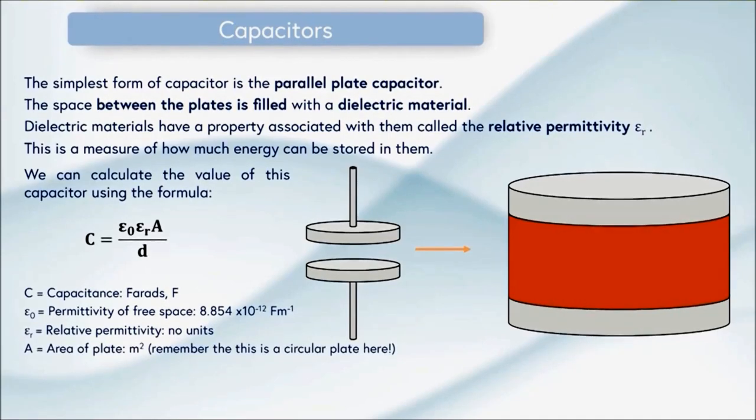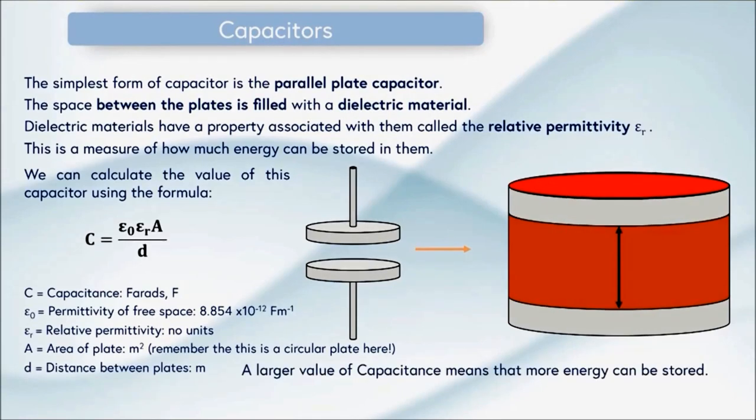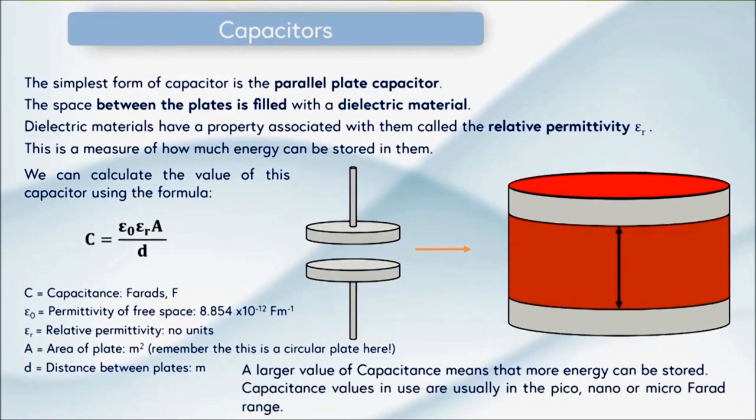A is the area of the plate in meters squared and in this situation remember we've got a circular plate so you'll have to substitute in the area of a circle. Finally D is the distance between the plates and this is measured in meters. A larger value of capacitance means that more energy can be stored inside it. Capacitance values are usually in the pico, nano or microfarad range.